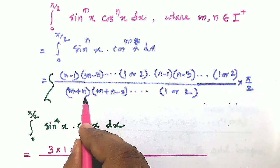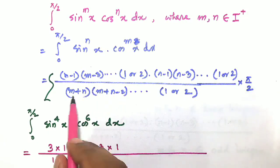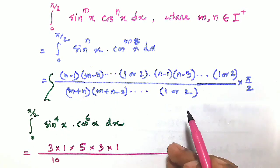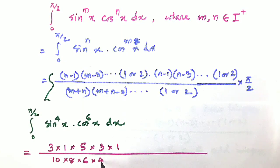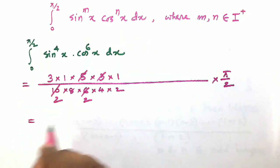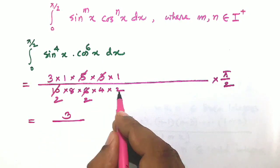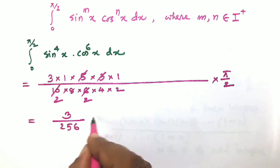For the denominator, m plus n equals 4 plus 6 = 10. We subtract 2 repeatedly: 10, 8, 6, 4, 2. So the denominator is 10 into 8 into 6 into 4 into 2, which equals 3840. The numerator is 3 into 1 into 5 into 3 into 1 = 15. The result is 15 divided by 3840, multiplied by pi upon 2, giving 3 pi upon 512.